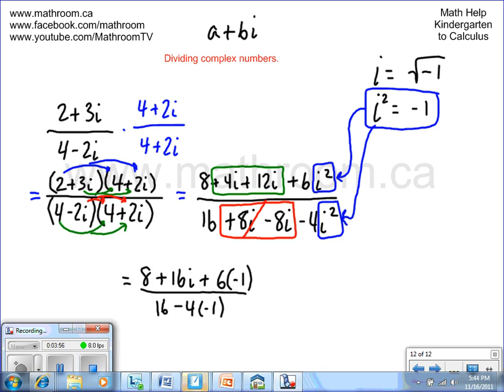Let's keep going here. We have 8 plus 16i plus 6 times minus 1 is minus 6. And on the bottom, we have 16 minus 4 times minus 1 is plus 4.